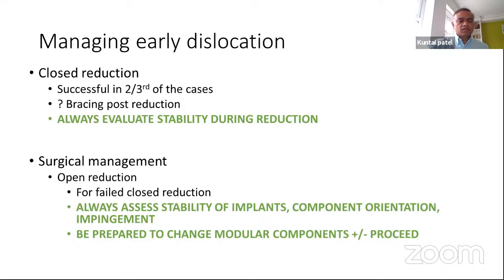For early dislocation, mainstream treatment is closed reduction, generally successful in two-thirds of cases. Always evaluate stability post-reduction. There will be instances where closed reduction cannot be achieved — buttonholing of the head through the hip capsule is an important cause. If closed reduction cannot be achieved, be prepared to do an open reduction. During open reduction, always assess the stability of the stem, acetabulum, and modular components, and be prepared to change modular components if there is instability or poor orientation.